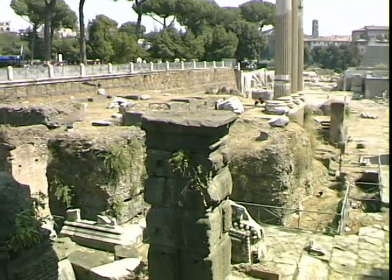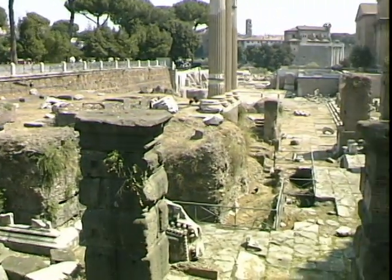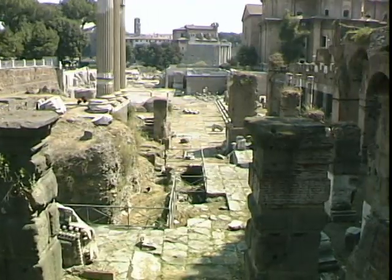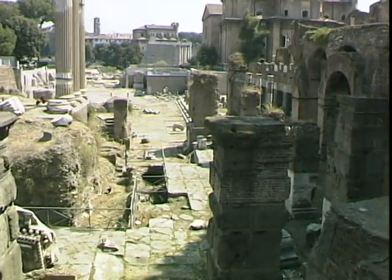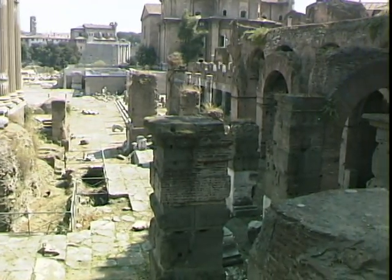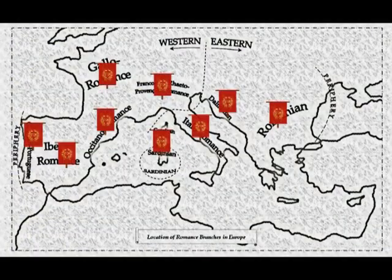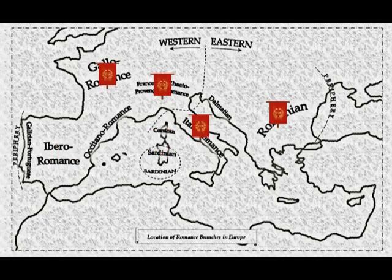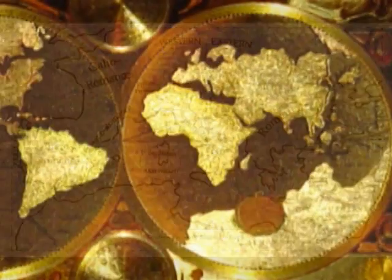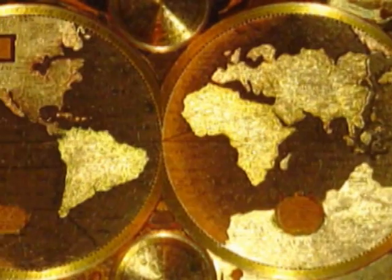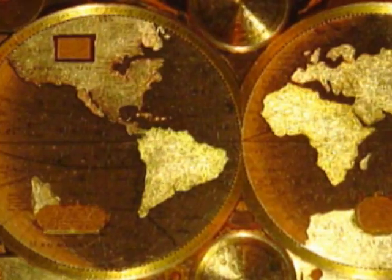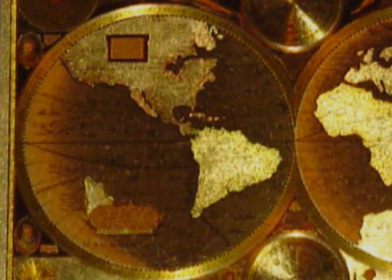The Roman Empire spread Latin as it conquered its way throughout ancient Europe. Local, popular forms of Latin, collectively called Vulgar Latin, developed over the centuries, changing, as languages do, into a variety of languages and dialects across the continent. Some of these languages even spread across the globe and continue to develop far from their original homes.